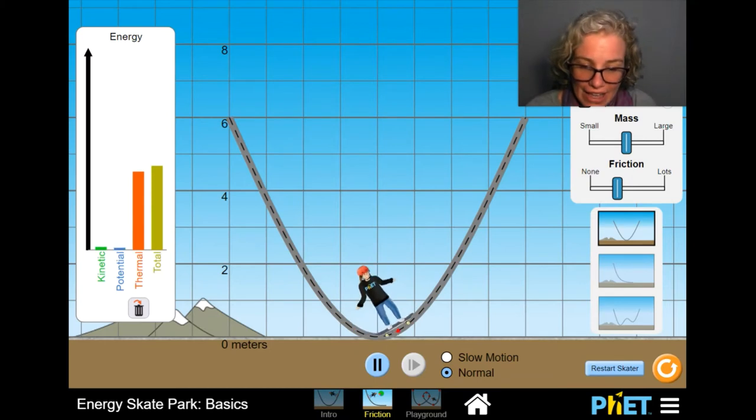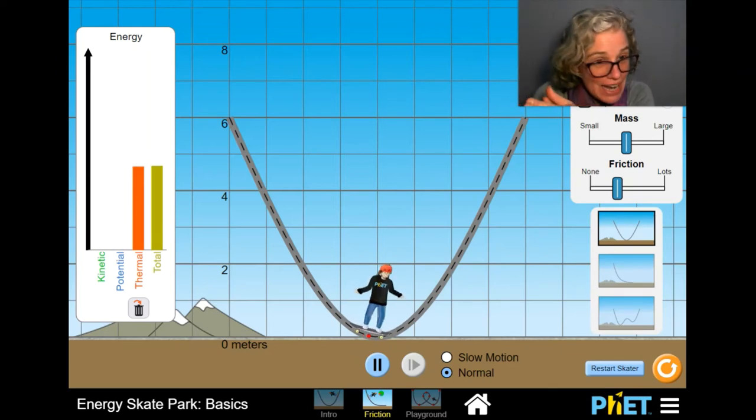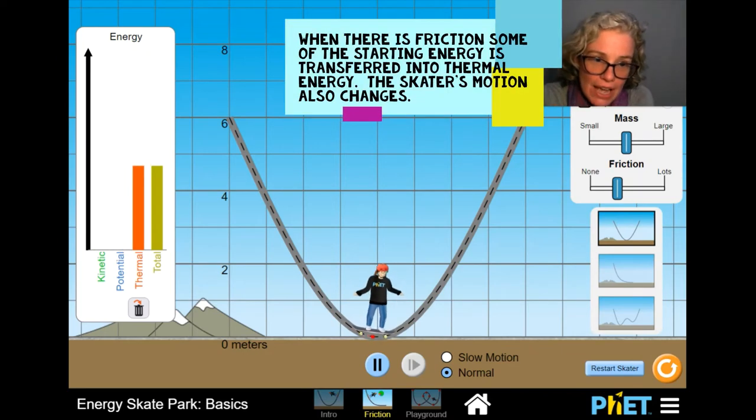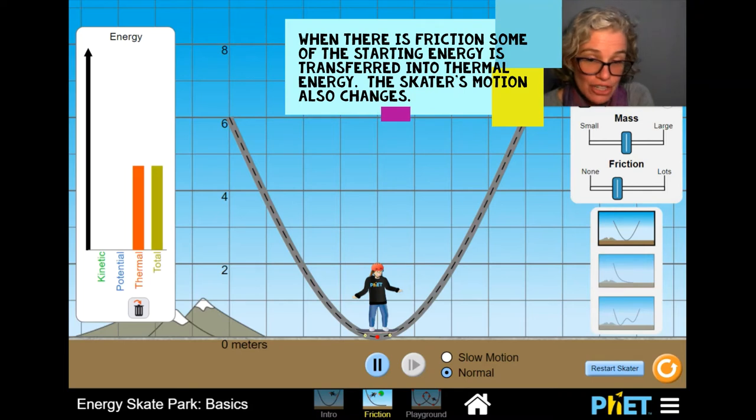Well, as there is more rubbing of the wheels on the ramp, some of the energy is going to transfer into heat. We call that thermal energy. And in the end, the skater stops moving because all the energy has transferred into thermal energy. The wheels will be hot. The ramp itself might be a little bit warmer.